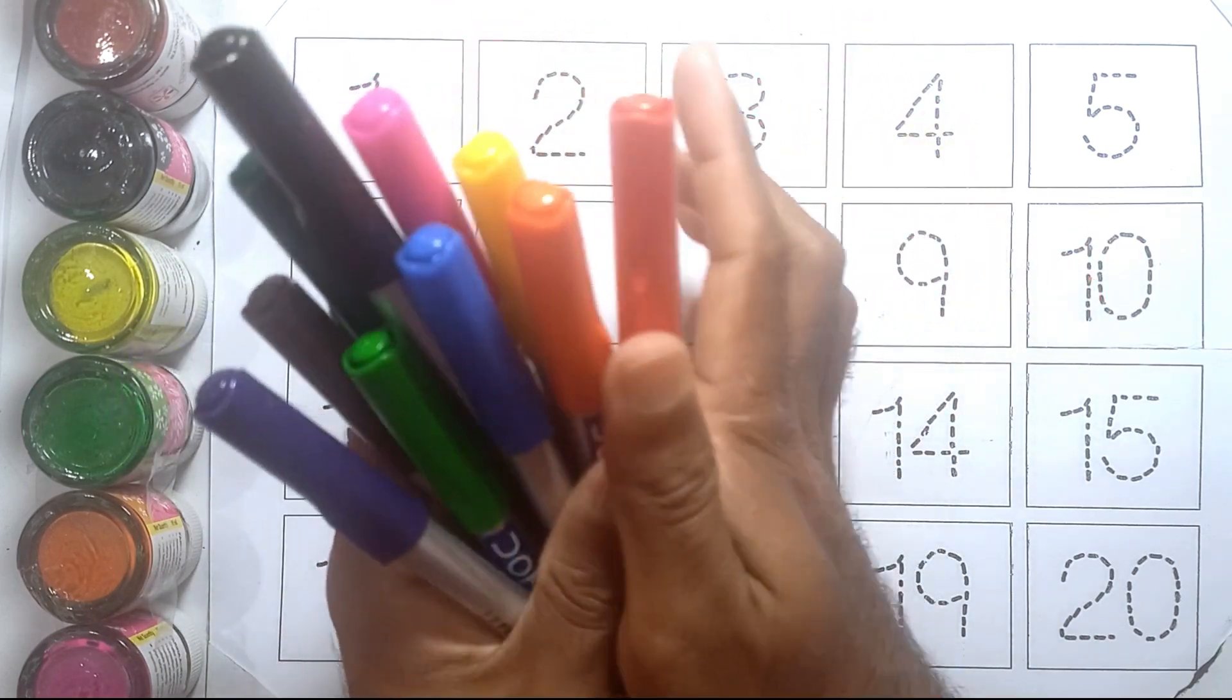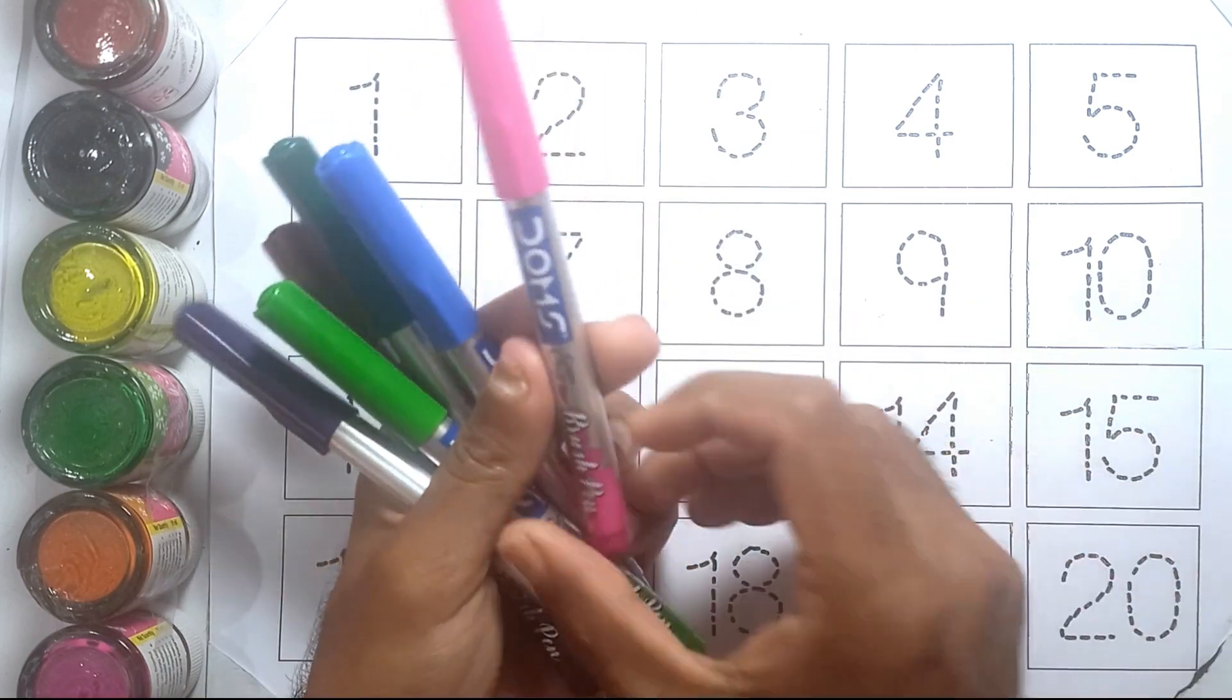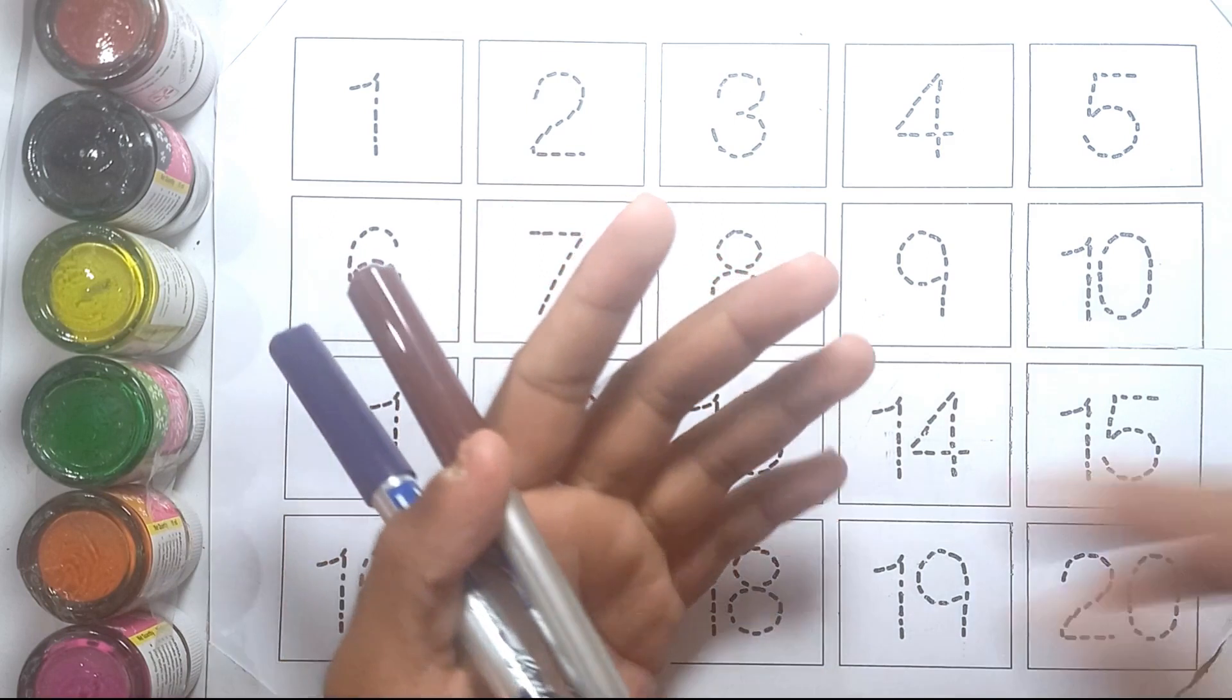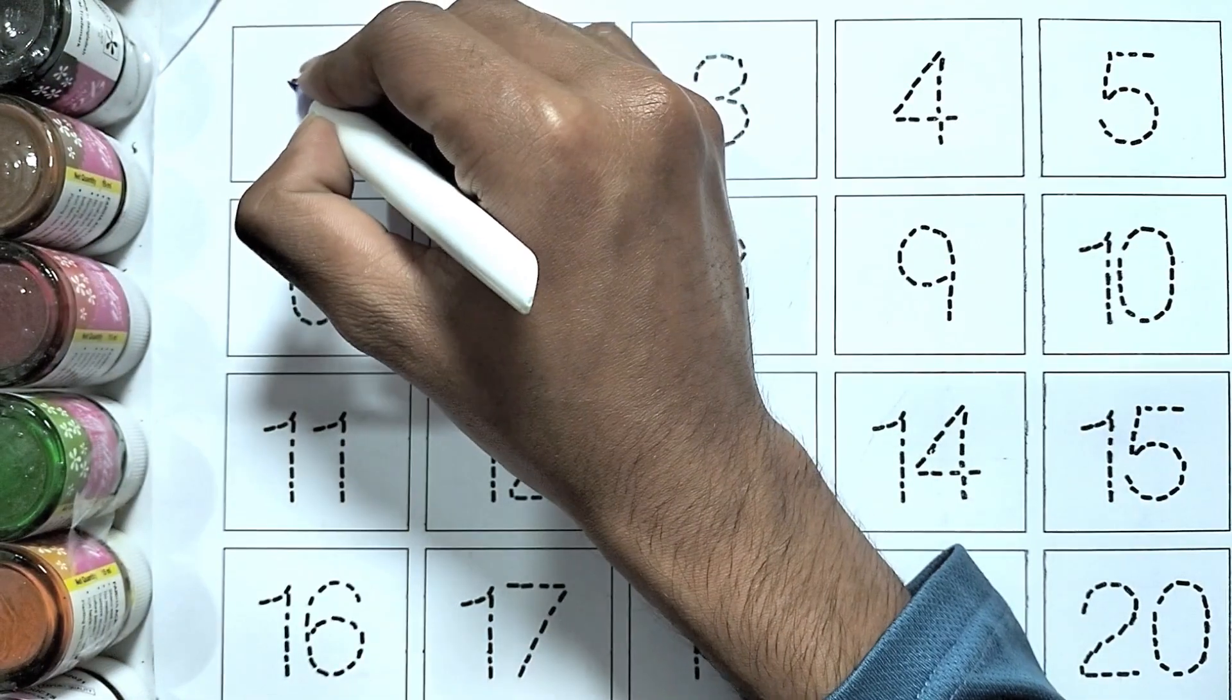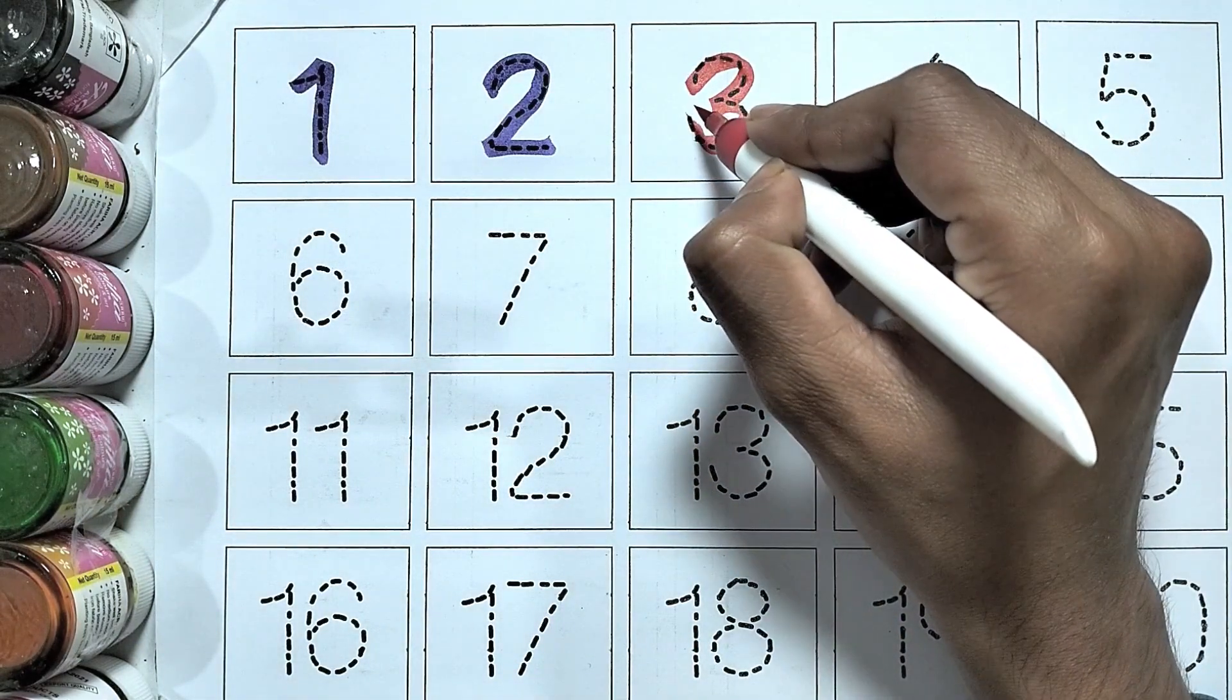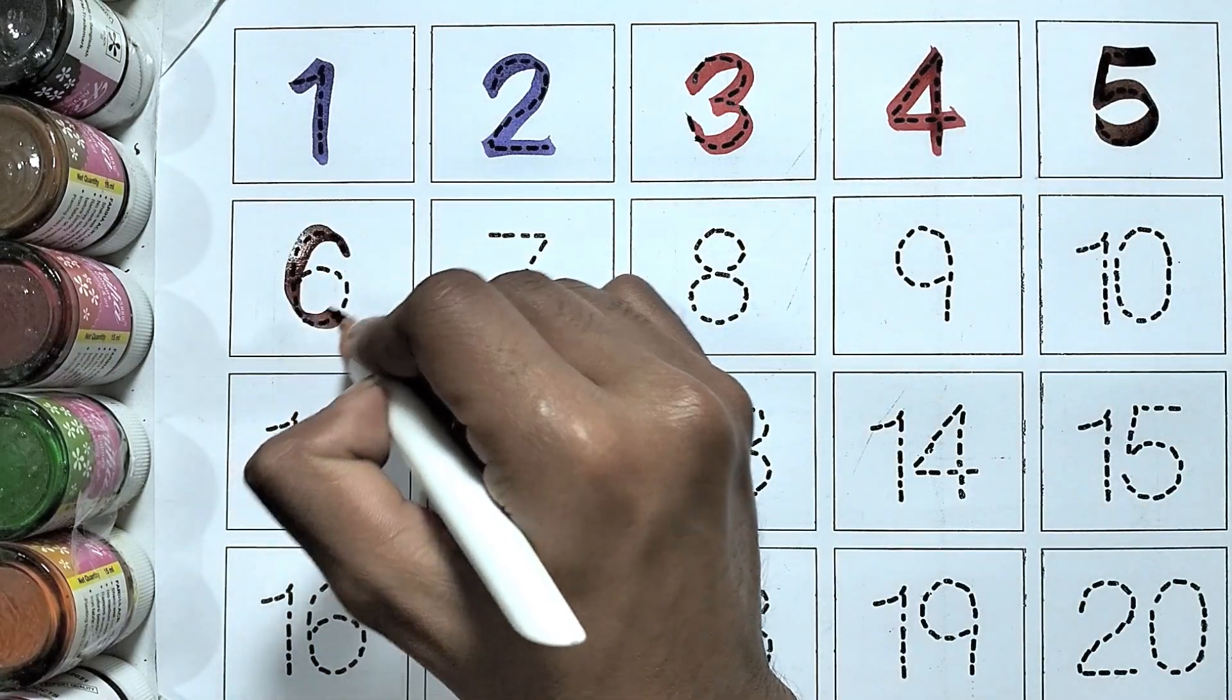This is our color. This is red color, yellow color, orange color, black color, pink color, blue color, light green color, sea green color, chocolate color, purple color.